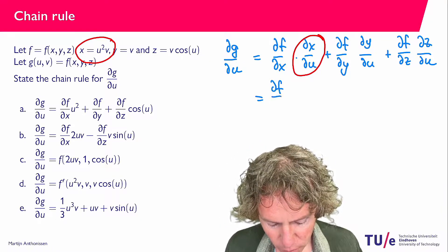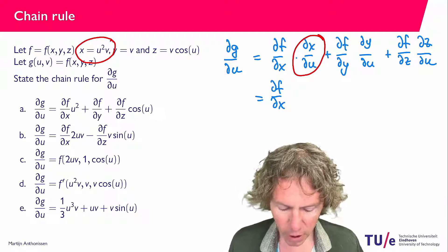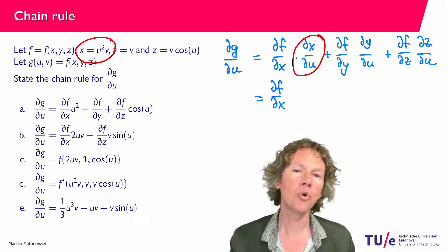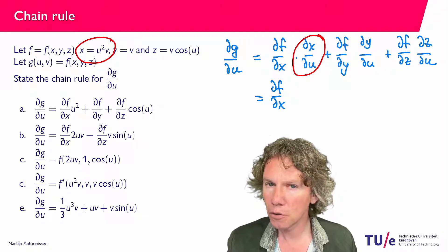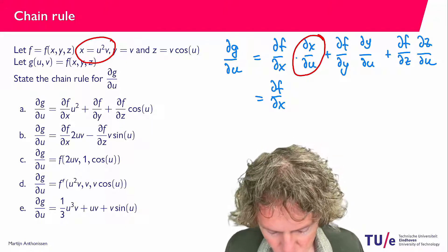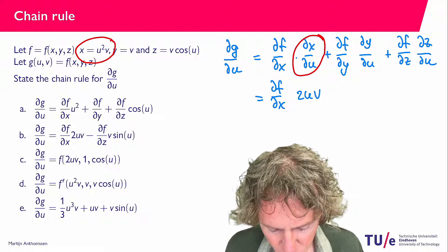...then we get ∂f/∂x times... differentiating u squared v with respect to u means that we consider v to be a constant. u squared gives 2u, so we get 2uv.